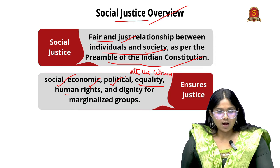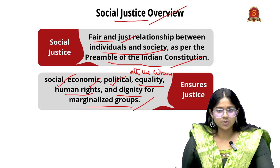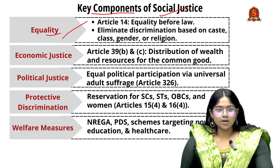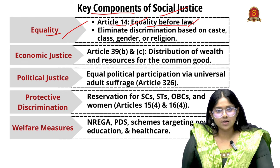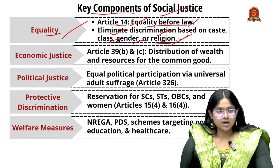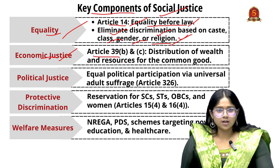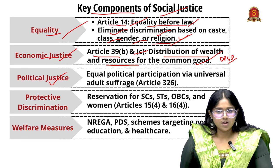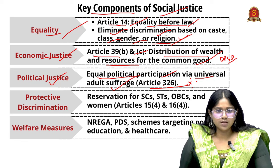Social justice refers to the fair and just relationship between individuals and society, as per the Preamble of the Indian Constitution, which ensures social justice, economic justice, and political justice for all citizens. It also seeks to ensure equality, human rights, and dignity for marginalized groups. The key components of social justice include: equality — Article 14 of the Constitution guarantees equality before law and eliminates discrimination based on caste, class, gender, or religion. Economic justice — Article 39(b) and (c) focus on distribution of wealth and resources under Directive Principles. Political justice — equal political participation through universal adult suffrage under Article 326.